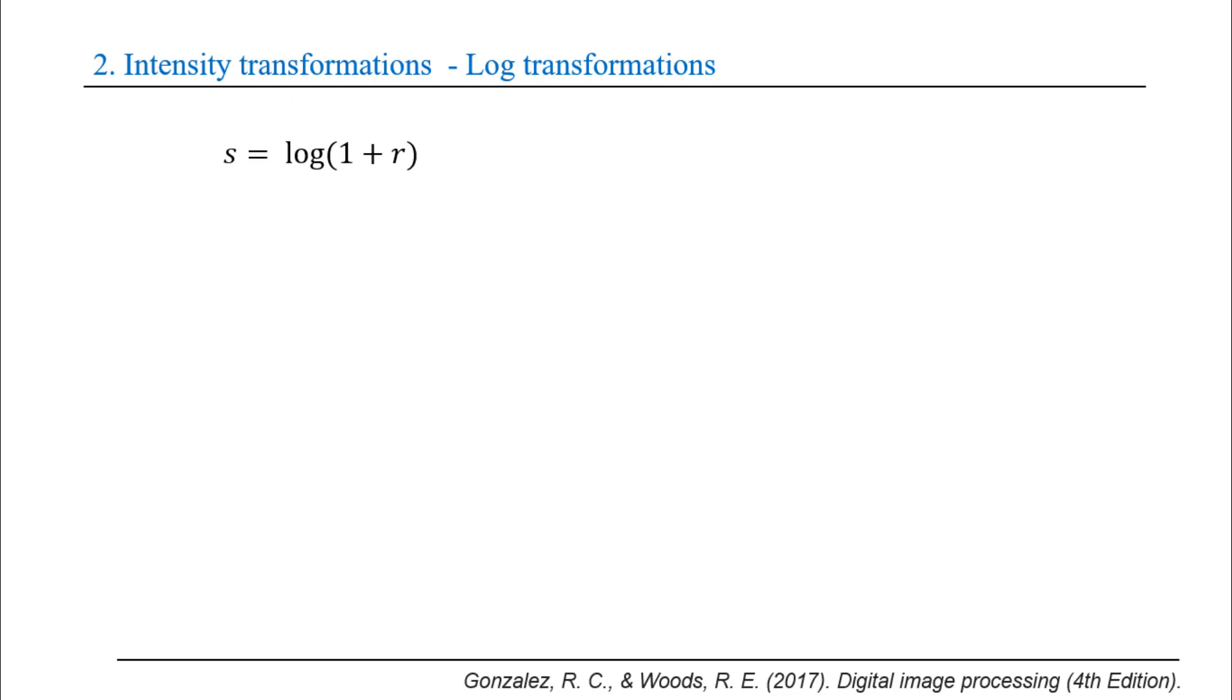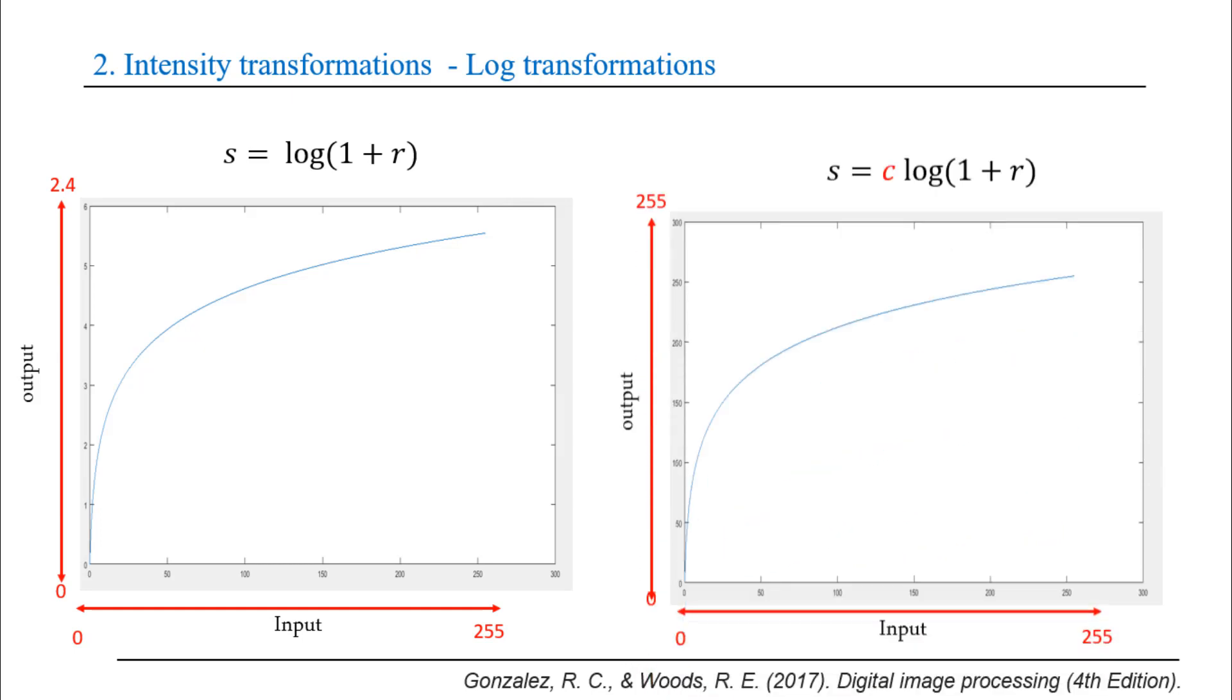Now from the following figure we notice that when input values vary from 0 to 255, the output varies from 0 to 2.4. So the output image will be entirely black because the log transformation compresses the input values to range from 0 to 2.4. So all gray scale values are represented by just 0, 1, and 2.